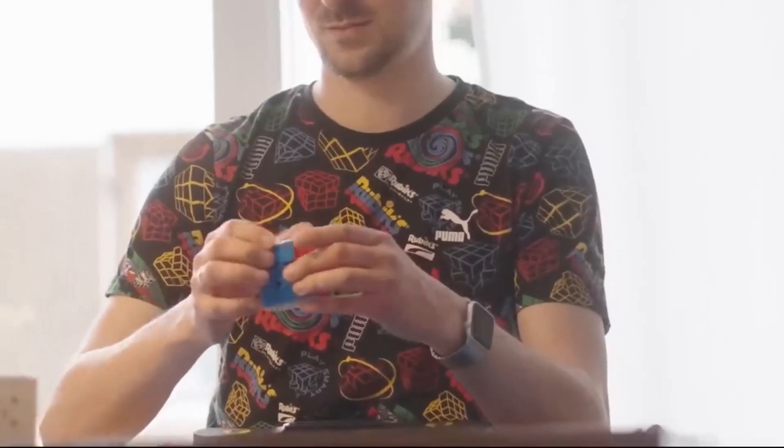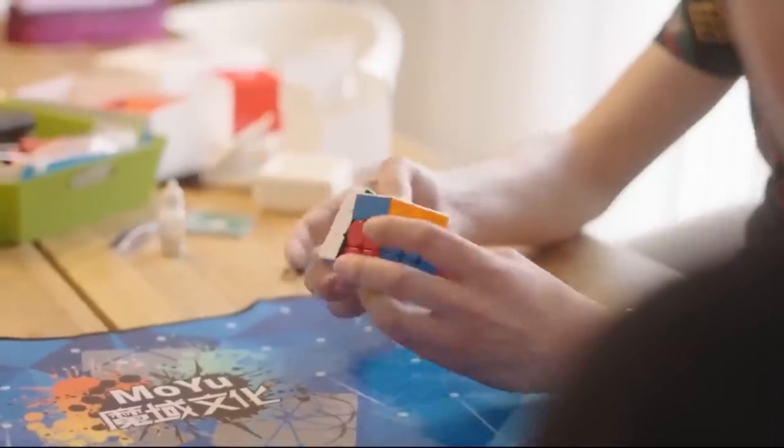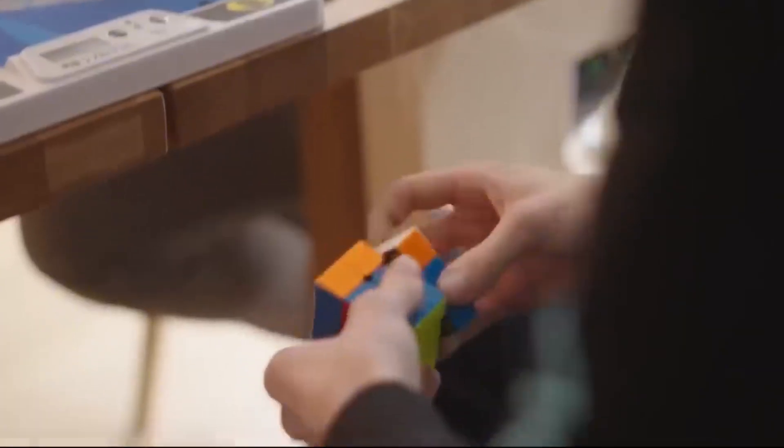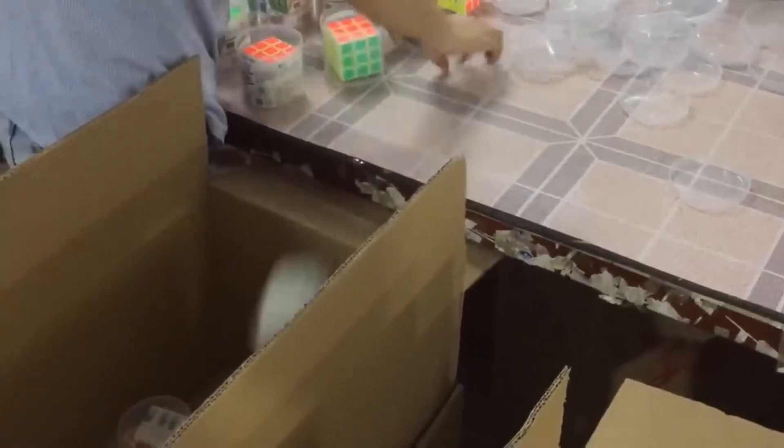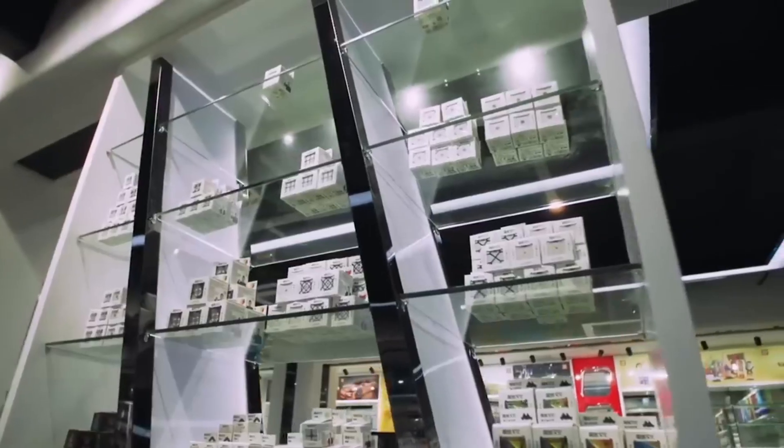After labeling, the cubes are prepared for packaging. They can be placed individually in boxes designed specifically for each cube, or they can be grouped into packs containing multiple units. The choice of packaging method depends on the manufacturer's preferences and market needs.